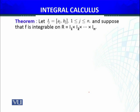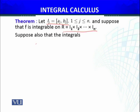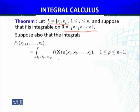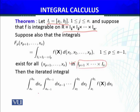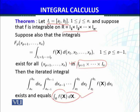Similarly, we can see the converse version. Let ij = [aj, bj] be the intervals, and suppose that f is integrable on this rectangle R. Suppose also that the iterated integrals f(x) dx exist for all x_{p+1}, ..., x_n in this interval. Then the iterated integral equals the integral of f(x) over the rectangle R - so the iterated integral equals this one.